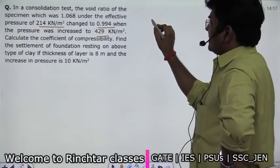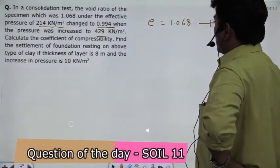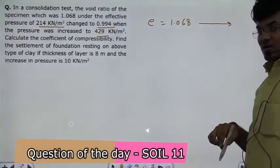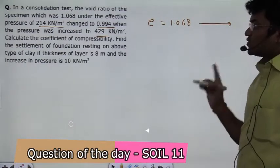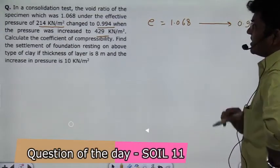Let's talk about the void ratio E. So the void ratio was 1.068, it changed here. When you put pressure, the voids will be reduced. The void ratio will be reduced. In the question, you also have a decrease to 0.994.